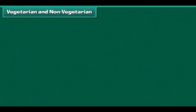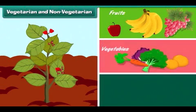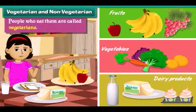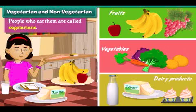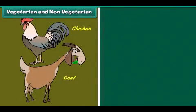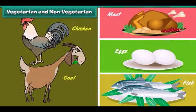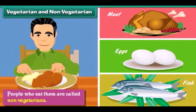Plant products like fruits, vegetables and dairy products are vegetarian food. People who eat them are called vegetarians. Animal products like meat, eggs and fish are non-vegetarian food. People who eat them are called non-vegetarians.